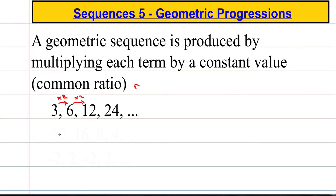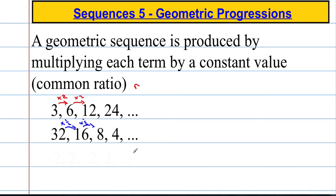How about the next sequence? 32, 16, 8, 4. Hopefully with a little bit of thought you can realise that we're multiplying each term by a half. So to get to the next term we multiply by a half and so on. And this sequence is getting smaller and smaller.